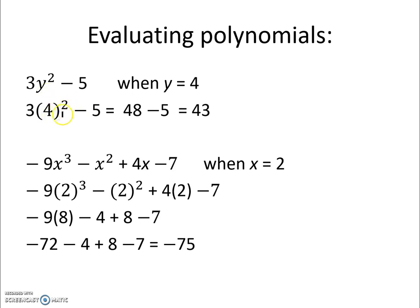4 squared we know is 16, and 3 times 16 is 48. We still have minus 5, and 48 minus 5 is 43. So this polynomial evaluated when y equals 4 is 43.